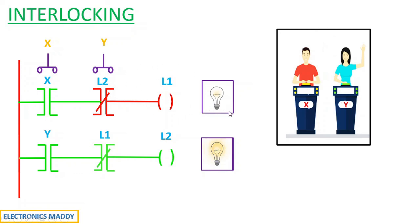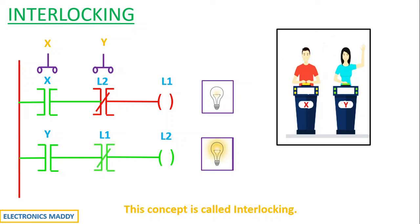This concept is called interlocking, where if one of the push-button switches is pressed first, the operation corresponding to it only should happen, and even if the other one is pressed after the first one, no operation should take place. This is applicable in many applications — for example, if a motor should rotate in the forward and reverse direction, once it is rotating in the forward direction, you cannot immediately change it to rotate in the reverse direction, and the same logic can be applied there.